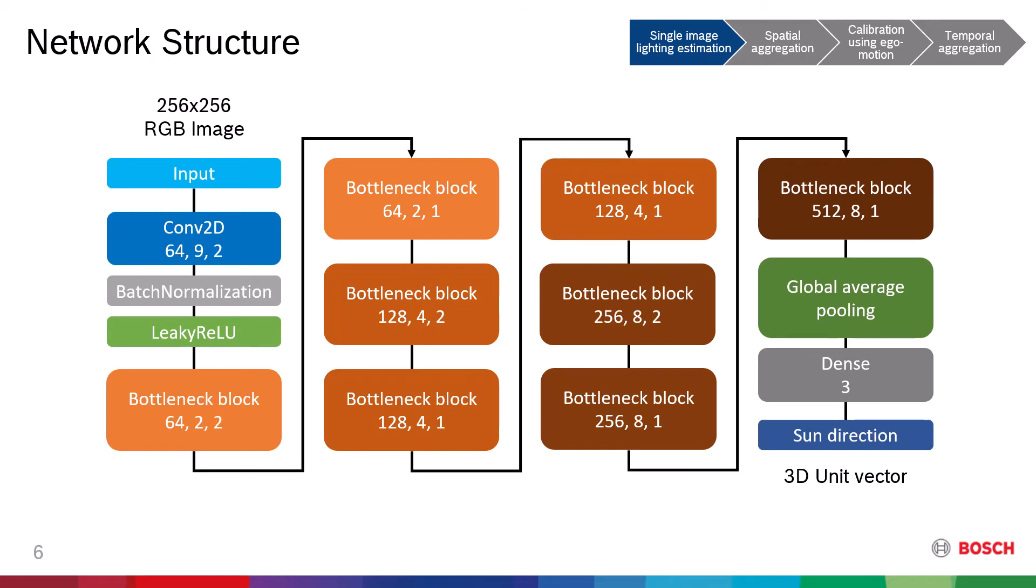This is the structure of our lighting estimation network. It is composed of multiple bottleneck blocks where the convolutional block attention modules are applied on each bottleneck block. In this way, our network can focus on important spatial and channel features, and it can avoid vanishing or exploding gradient problems. A global average pooling layer is adapted to connect the convolutional network and the output layer, and it serves as a tool to mitigate possible overfitting. The dense layer at the end then refines the encoded values into the sun direction estimate.